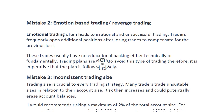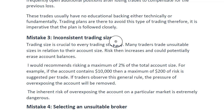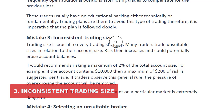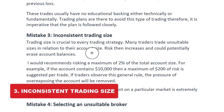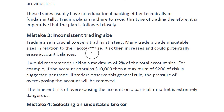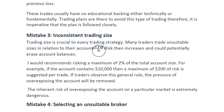The third mistake a lot of traders make is inconsistent trading size — in other words, they don't have a consistent risk management plan. That means you don't have a consistent lot size. You might be on 0.1 lots today and five lots before you know it, and you'll go 50% drawdown or even 100% drawdown and your account is gone. Trading size is crucial to every trading strategy. For example, if you are trading a $100 account and opening one lot size where every pip is $10, you are preparing to blow the account. I recommend a maximum of 2% risk per trade.